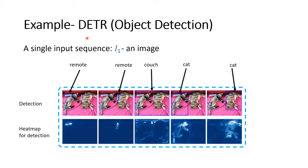Let's look at another example with DETR, which is a model for object detection. This model gets a single input sequence I1, which is an image. The output of the model is a bounding box and a classification for each object in the image. Given this input image, we have five bounding boxes and five classifications: two remotes, a couch, and two cats. Given each bounding box and classification, our method should output a heatmap of the pixels that correspond to that object — for the remote, the couch, and the cat respectively.